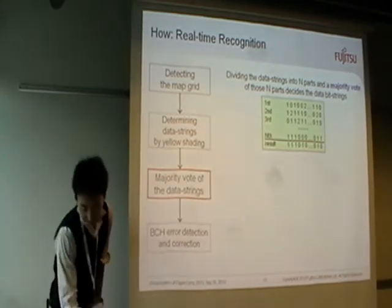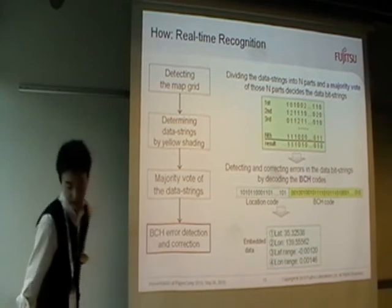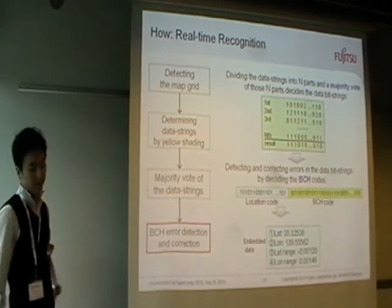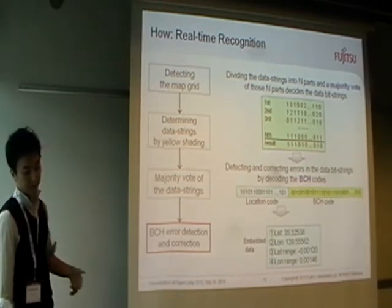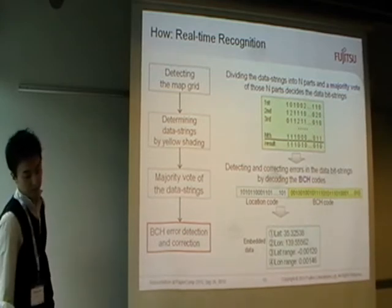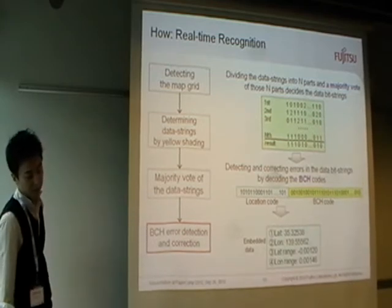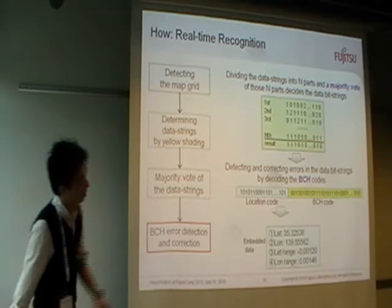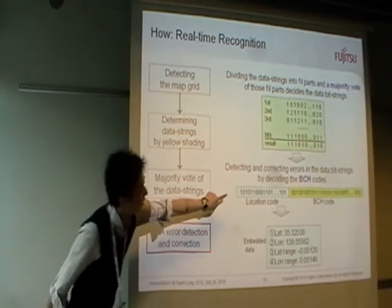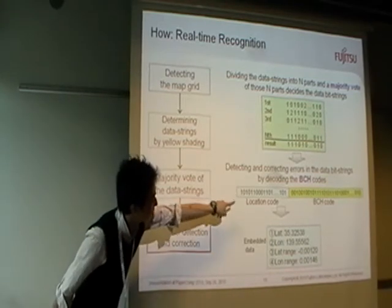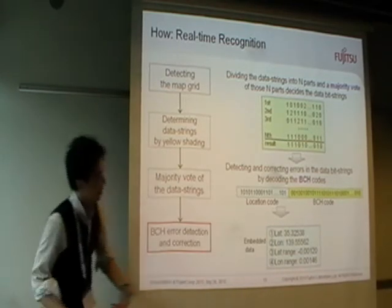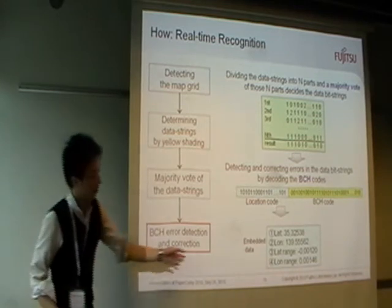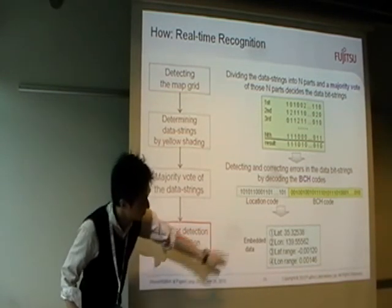In the last step, the decoder detects and corrects errors in the data bit strings by decoding a BCH code. The red numbers in these figures are corrected, and then the embedded data can be retrieved.